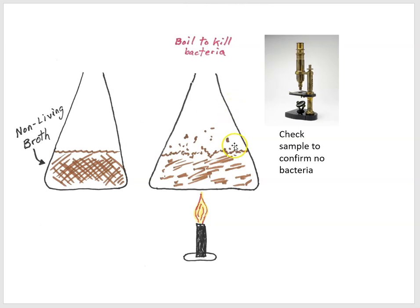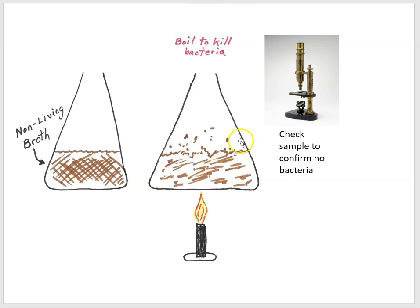To confirm that you've boiled your broth long enough, you take a sample of the broth and check — you should find no bacteria. If you find bacteria, you need to keep boiling. Scientists would boil the broth, then take a sample or two and check, and if they found no bacteria, they would cork up the flask.